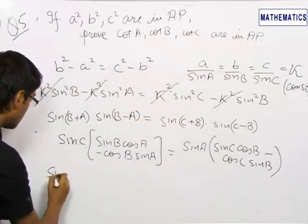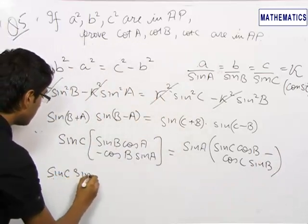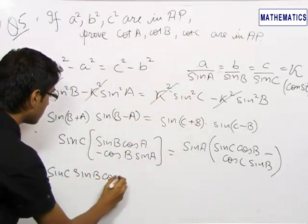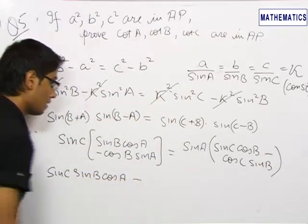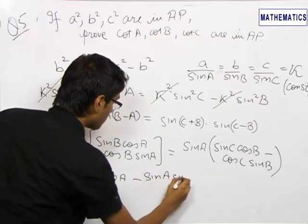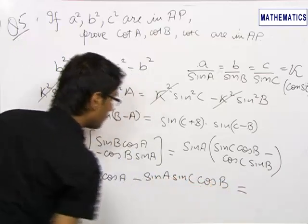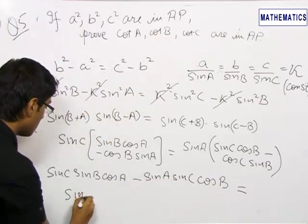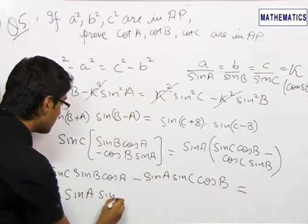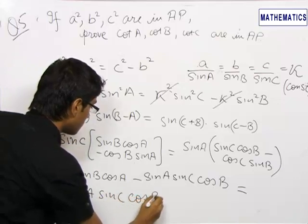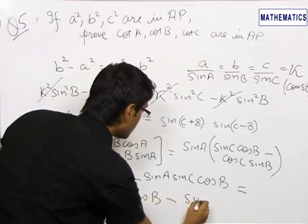Now this becomes sin C sin B cos A minus sin A sin C cos B equal to sin A sin C cos B minus sin A sin B cos C.